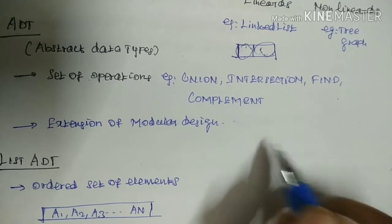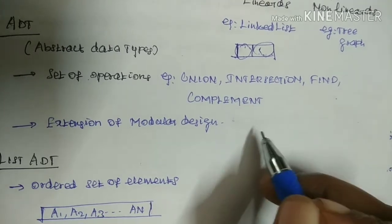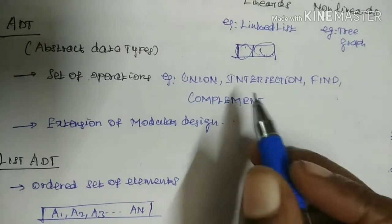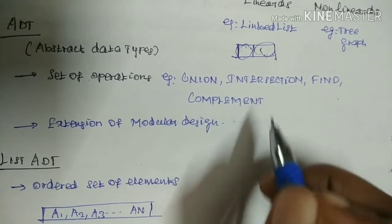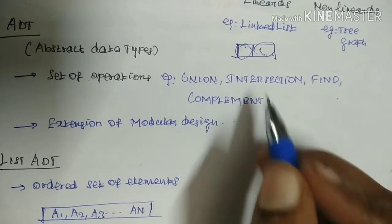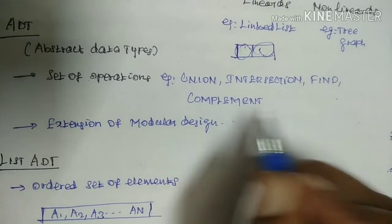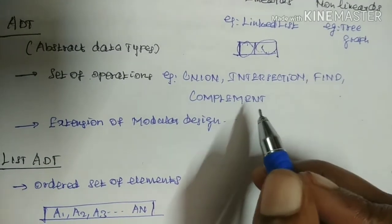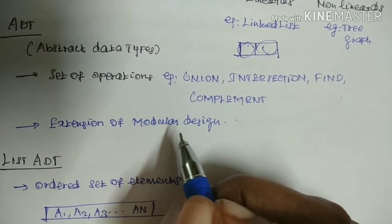This logical unit of code is used to perform some specific task. If you have a program, there are several modules, and each module can be compiled separately. One module can call another module. The debugging process will be easier with modular design.